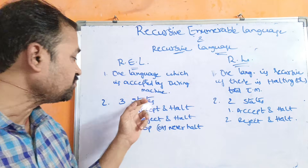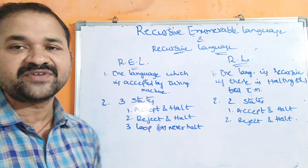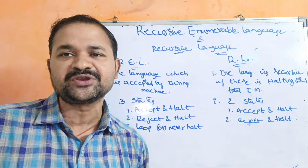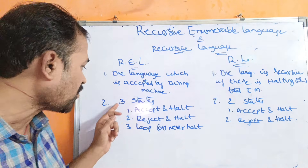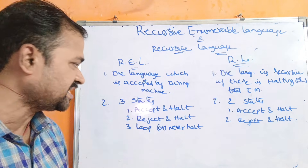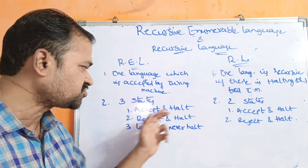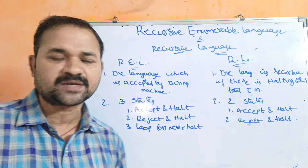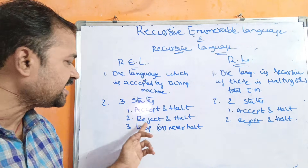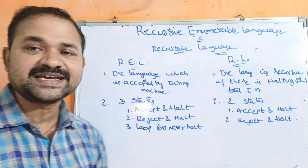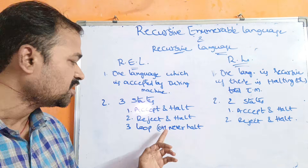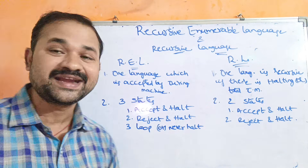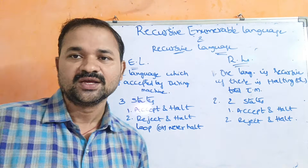Recursive enumerable language mainly produces one of these three states. The first state is accept and halt. The second state is reject and halt. The third one is loop, or never halt.